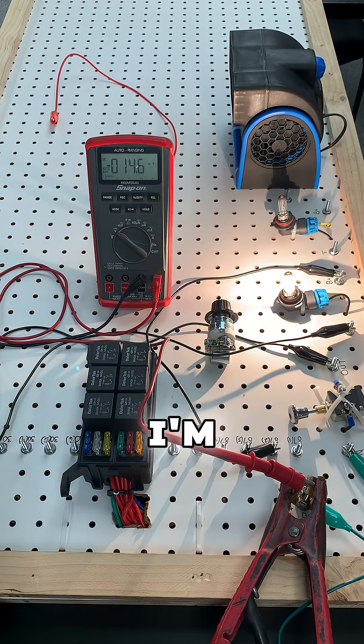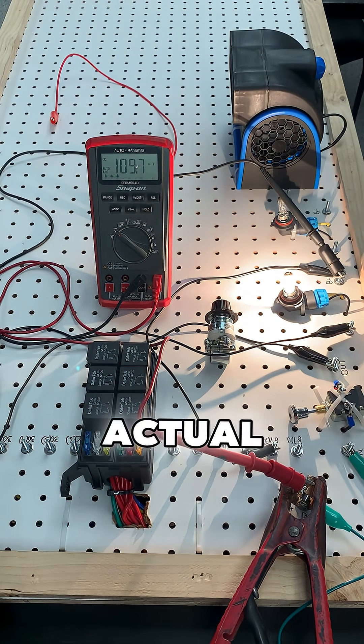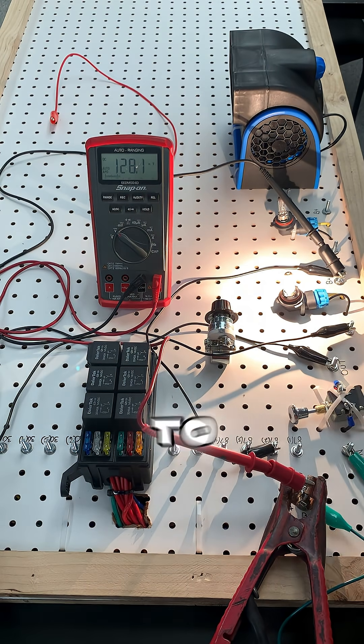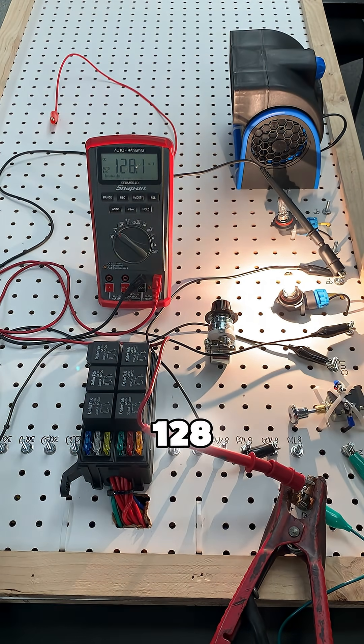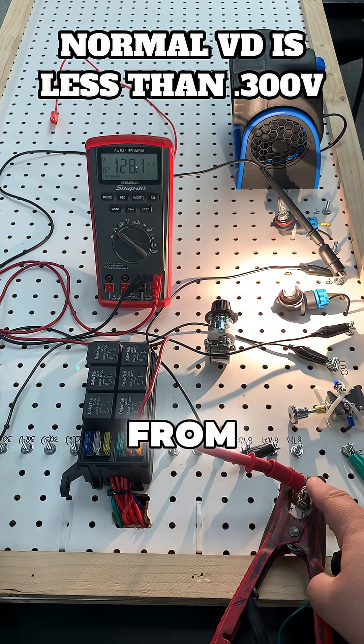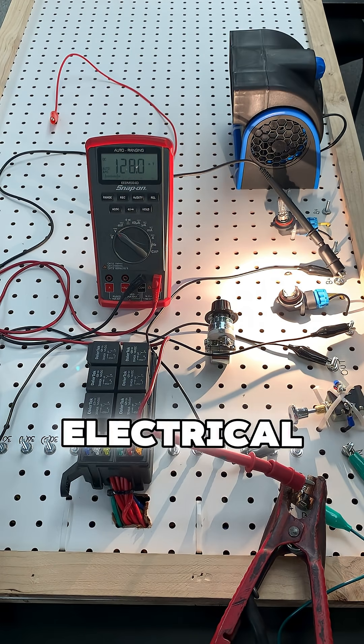I'm leaving my positive lead here and moving my other lead to the positive side of my load. Across the load, we're losing 128 millivolts, indicating there's a small amount of resistance from the positive side of the battery all the way to the positive side of my electrical load.